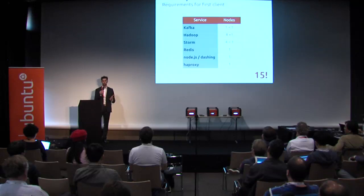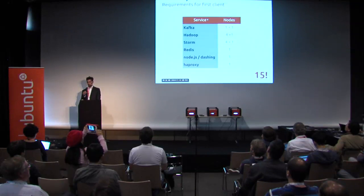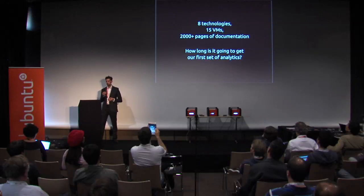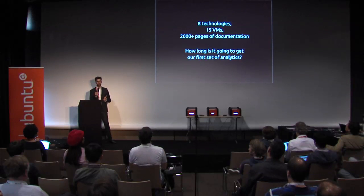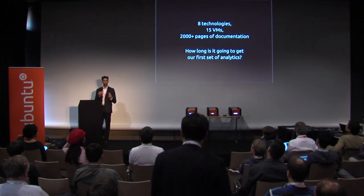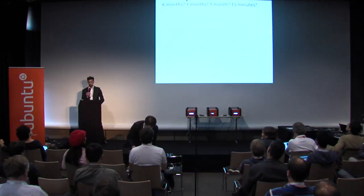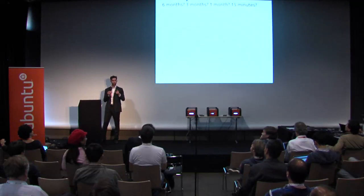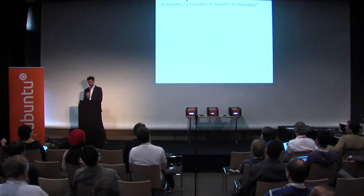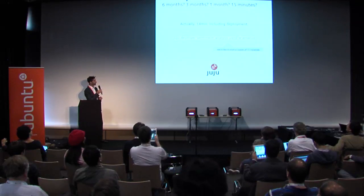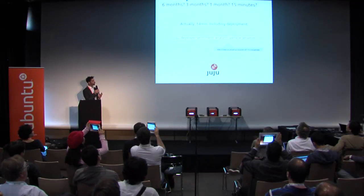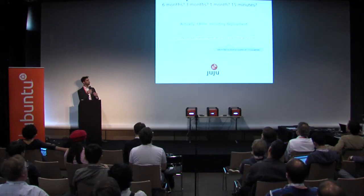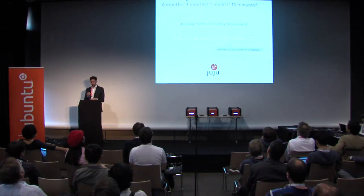If we dig a little deeper, it's not as easy as five steps. Kafka relies on Zookeeper, so that's two services. Hadoop needs at least four compute nodes and one master. Storm is also distributed, needing five nodes including a master, plus Redis, Node.js, and HAProxy. In total: eight technologies, at least 15 VMs to start, and more than 2,000 pages of documentation. But with Juju you can deploy this entire sentiment analysis bundle in just 14 minutes — and that includes the demo. You design it once, save it, and redeploy it on any cloud including bare metal.